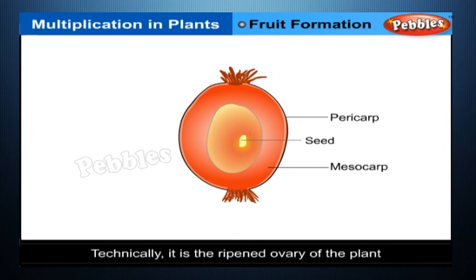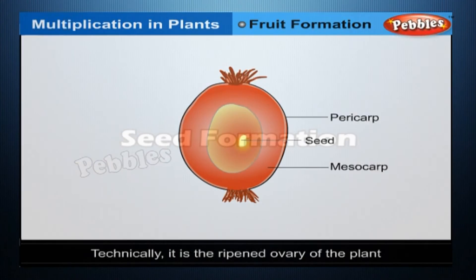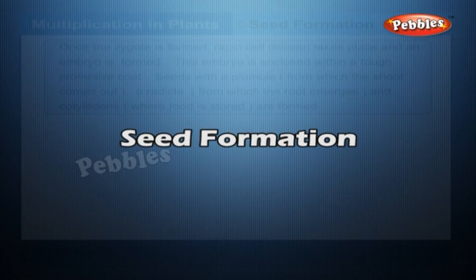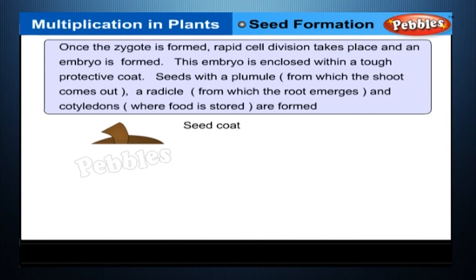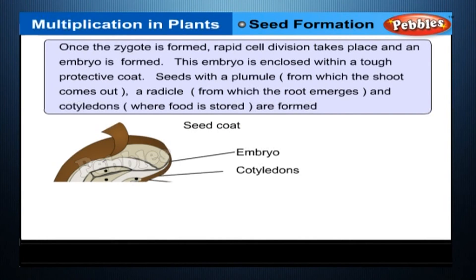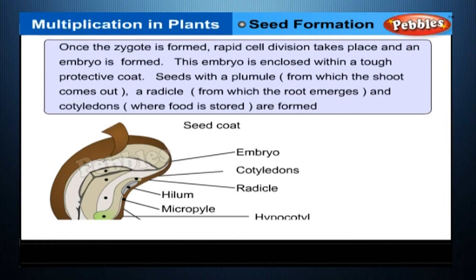Seed formation: once the zygote is formed, rapid cell division takes place and an embryo is formed. This embryo is enclosed within a tough protective coat. Seeds contain a plumule, from which the shoot comes out, a radicle, from which the root emerges, and cotyledons, where food is stored.